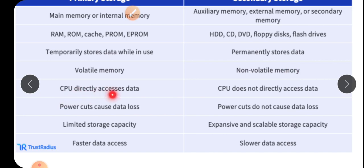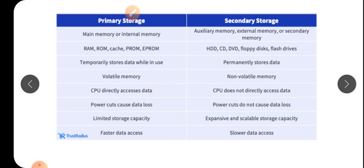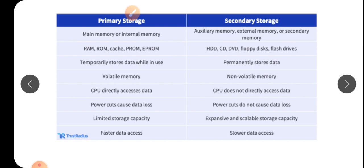The CPU directly accesses data from primary memory. The CPU cannot directly access data from secondary memory — for example, a pen drive must be plugged in before accessing its information, whereas RAM and ROM are always inside. A power cut causes data loss in primary memory, but a power cut does not cause data loss in secondary memory.